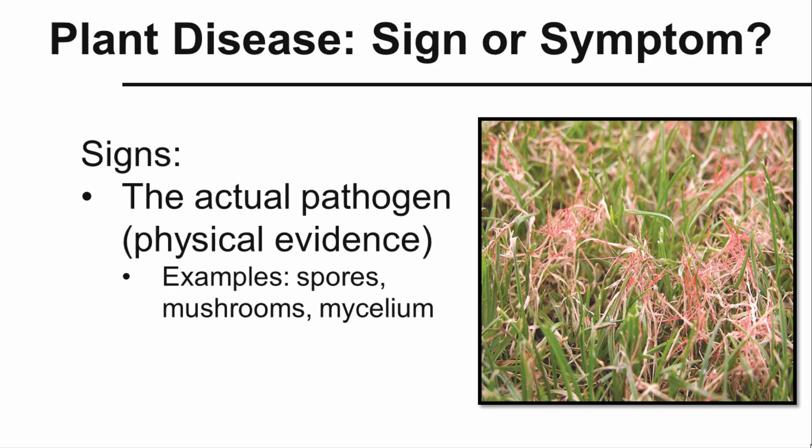If we move over to signs, the sign is the actual pathogen — it's physical evidence of that pathogen. It may be spores from the fungi, mushrooms from the fungi, or the mycelium. In this particular case, we see red thread on turf grass, and the pinkish-reddish threads you see growing out of the turf grass blades is actually the red thread mycelium of the fungus causing this particular disease. So it's the actual pathogen.